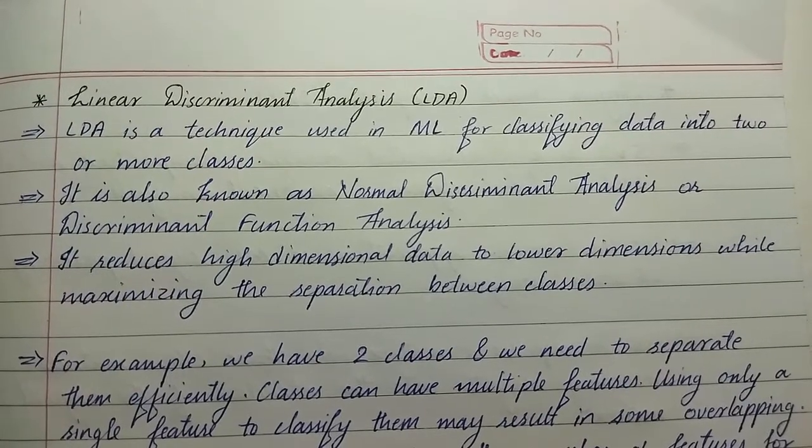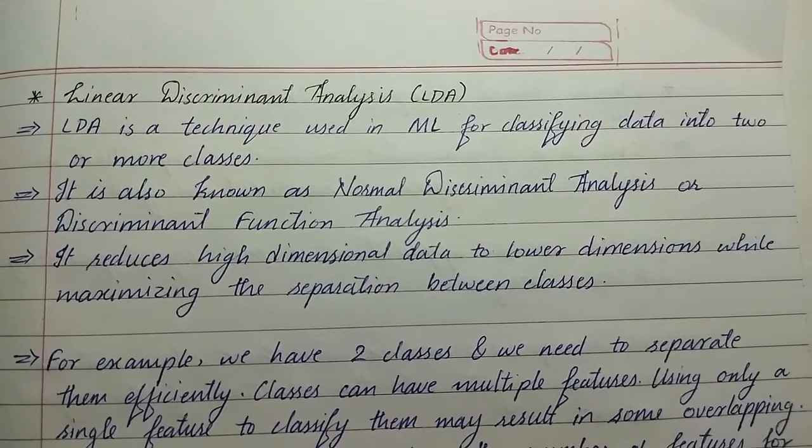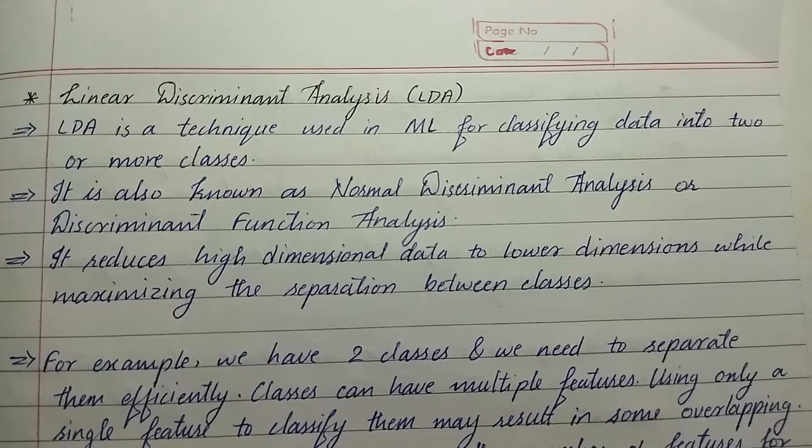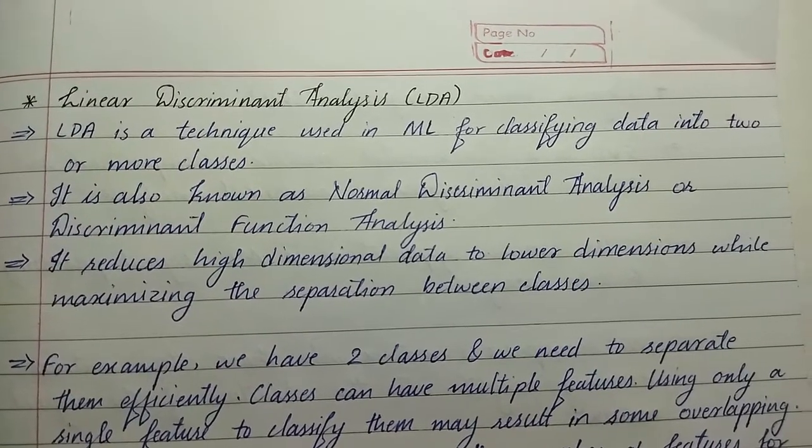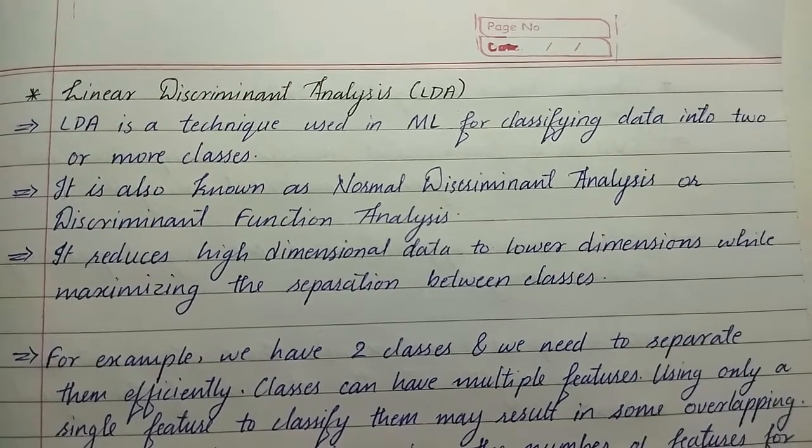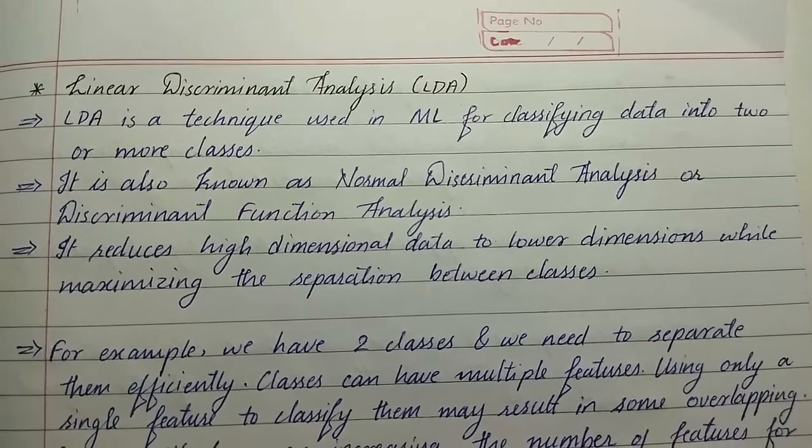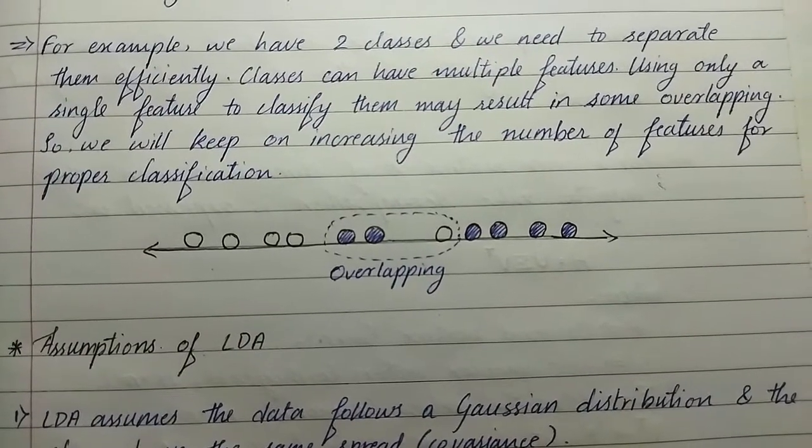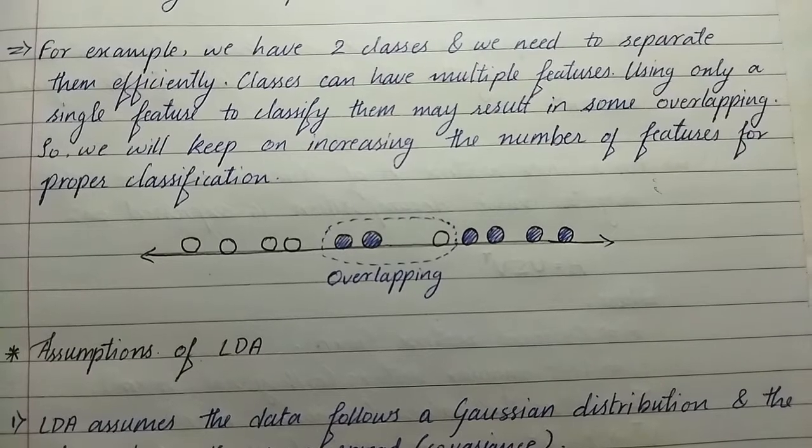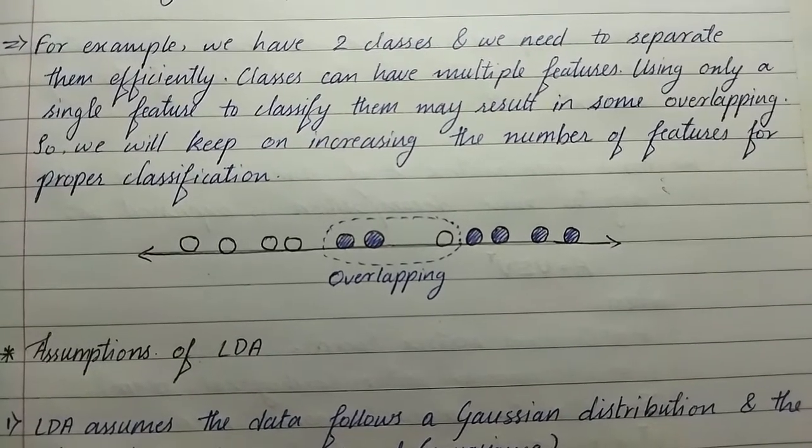It is also known as Normal Discriminant Analysis or Discriminant Function Analysis. It reduces high dimensional data to lower dimensions while maximizing the separation between classes. For example, we have two classes and we need to separate them efficiently.